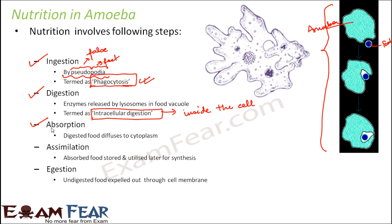Once the food is digested, absorption occurs. The digested food diffuses into the cytoplasm — the fluid present inside the cell. This fluid is like the blood inside our body; just as blood moves from one place to another, this fluid also moves and carries the digested food to different parts of the amoeba.